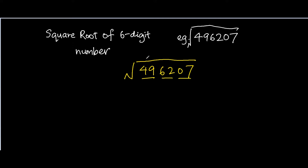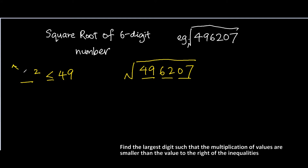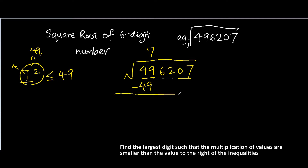The next thing you do is look at the first pair of 2-digit numbers and find a particular digit such that when you square this digit, it is smaller than or equal to 49. We know that if you square 7, you get 49, which is smaller than or equal to 49 — in this case exactly 49. So we put the single digit 7 here, and calculate its square, which is 49. So the remainder here is 0.